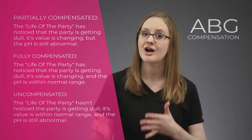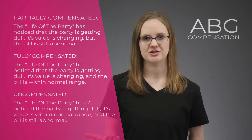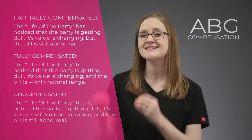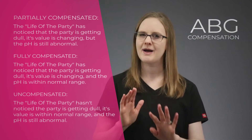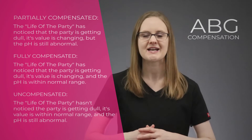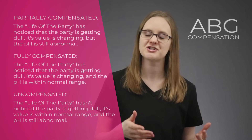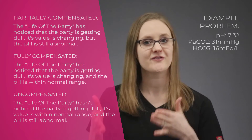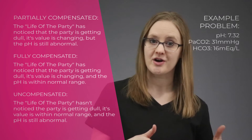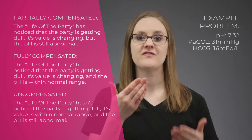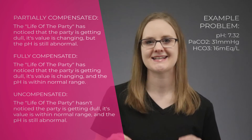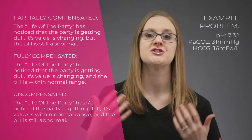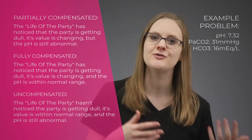If the life of the party is trying to help, then we call this either partially compensated or fully compensated. It's partially compensated if the helper's value is changing but the pH still isn't quite back within normal range. And if it's fully compensated, the helper's value is changing and the pH is now back to normal. So in our example, since the lungs are the life of the party and their value is changing, this ABG is some sort of compensated.